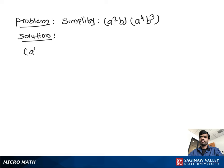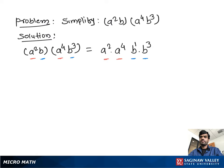Simplify a to the power 2 b into a to the power 4 b to the power 3. We can write the a terms together and b terms together: a to the power 2 into a to the power 4, and b to the power 1 into b to the power 3.